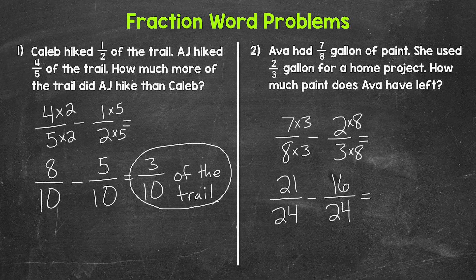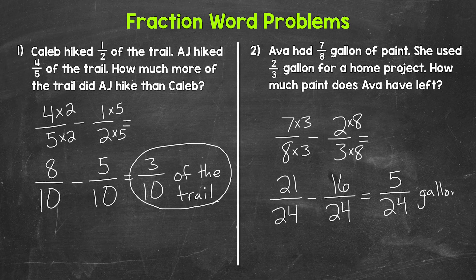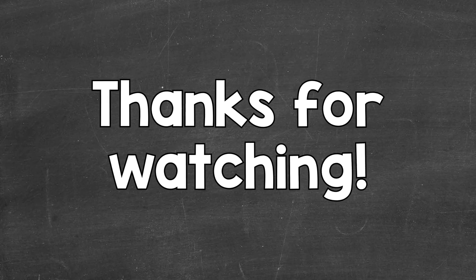We can subtract now. Let's start with the numerators. Twenty-one minus sixteen gives us five, and then we keep our denominator of twenty-four the same. So we get five twenty-fourths. To answer the question, how much paint does Ava have left? Five twenty-fourths of a gallon. And five twenty-fourths is in simplest form. So there you have it — a couple of examples of fraction word problems involving subtraction. I hope that helped.